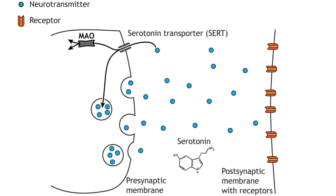Like the other monoamines, serotonin is transported back into the presynaptic terminal via the serotonin transporter. The difference between serotonin and the catecholamines dopamine and norepinephrine is that monoamine oxidase is the only enzyme used for degradation.